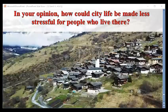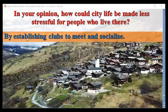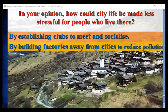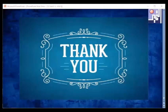I'd like you to think about this exercise: in your opinion, how could city life be made less stressful for people who live there? We discussed this in the previous lesson — by establishing clubs to meet and socialize, and by building factories away from cities to reduce pollution. These are very important textbook questions. Now try to revise the new vocabulary and the new grammar ideas about inverted sentences again and again. Next time, inshallah, we will have another new lesson. Thank you very much.